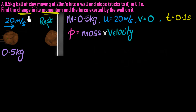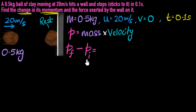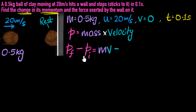Change is always calculated as final value minus initial value. So the change in momentum is the final momentum, which I'll call PF, minus the initial momentum. The final momentum is mass times the final velocity, minus the initial momentum, which is mass times the initial velocity. See if you can calculate what the final momentum and initial momentum are, subtract them, and find the answer — all the data is given.